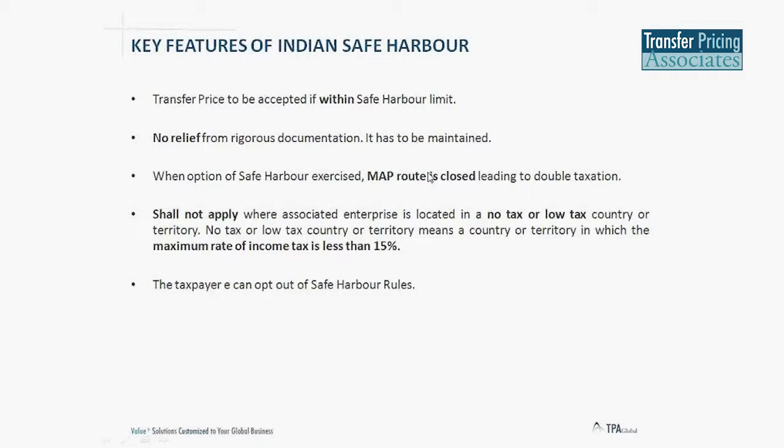When an option of safe harbor is exercised, the MAP — Mutual Agreement Procedure — route is closed, leading to potential double taxation. This makes the Indian safe harbor unilateral. Certain countries are studying and revisiting safe harbor, trying to make it bilateral, but as of now India's safe harbor is unilateral and the MAP route is closed. The Indian safe harbor will also not apply when associated enterprises are located in a no-tax or low-tax country — defined as a country with a maximum corporate tax rate of 15%.